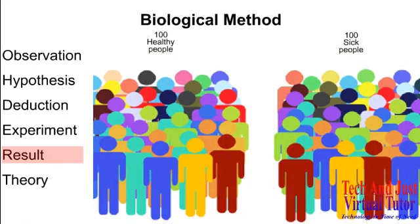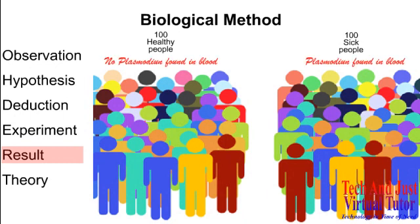Now, if the answer obtained from these experiments is true, then this means that the hypothesis is correct. And since the hypothesis is found true and correct, then the final step of theory takes place.